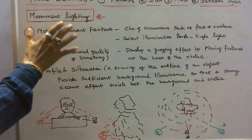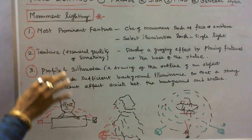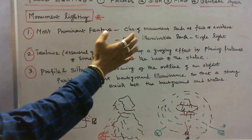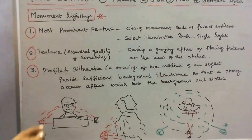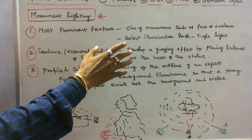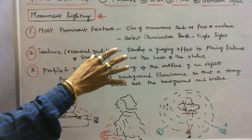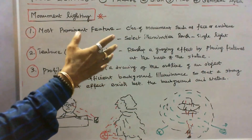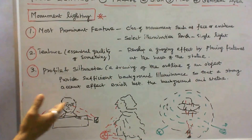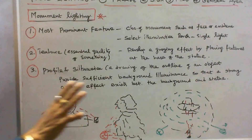The last type is monument lighting. For designing monument lighting, we consider three factors. The first is the most prominent feature — the characteristic of the monument such as its face or overall envelope. We must select a proper illumination level. Whether to use a single light or three lights depends upon the value we want to highlight. Our aim is to enhance the details of the statue, and fixture placement depends on whether we are concentrating on the face or the envelope.